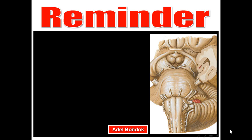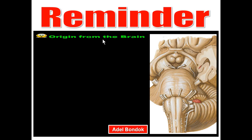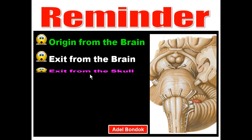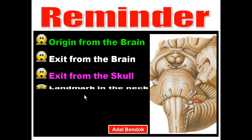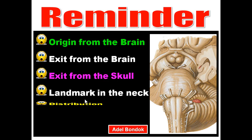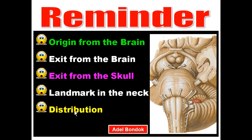Today I will talk about the last four cranial nerves: the glossopharyngeal, vagus, accessory, and hypoglossal nerves. Reminding you that for any cranial nerve, you should know the deep origin from the brain, exit from the brain, exit from the skull, landmark in the neck, branches and distribution, and the effect of a lesion. You should apply all these points to any cranial nerve.